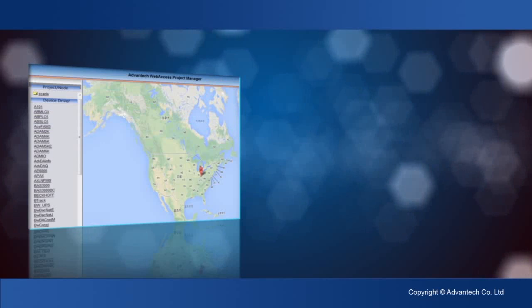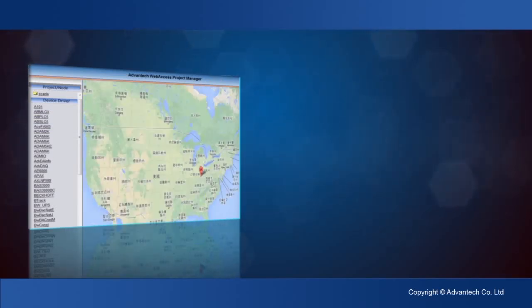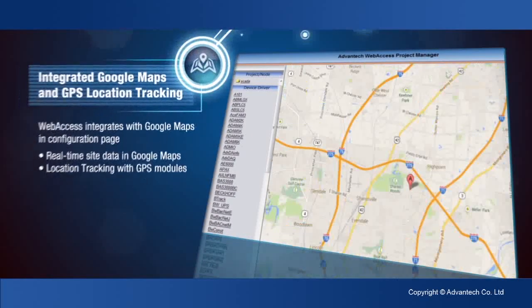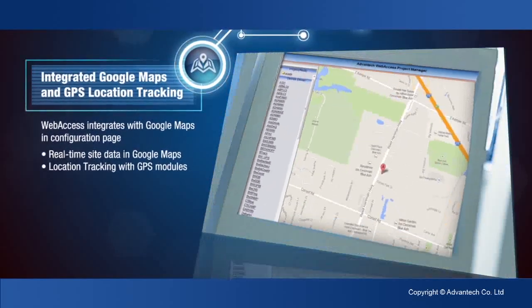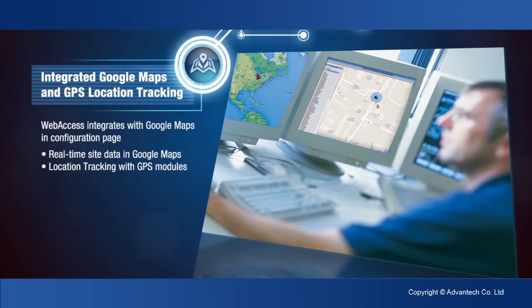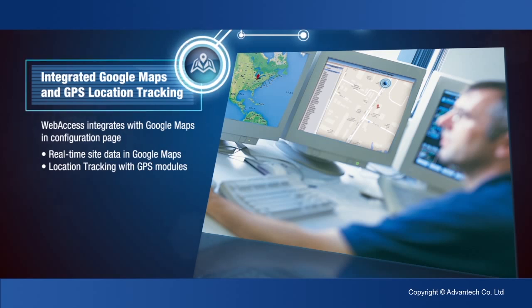Web Access integrates Google Maps and GPS location tracking function. It supports real-time data on each geographical site with Google Maps. This function also integrates with GPS modules to track the location of the marker in Google Maps.